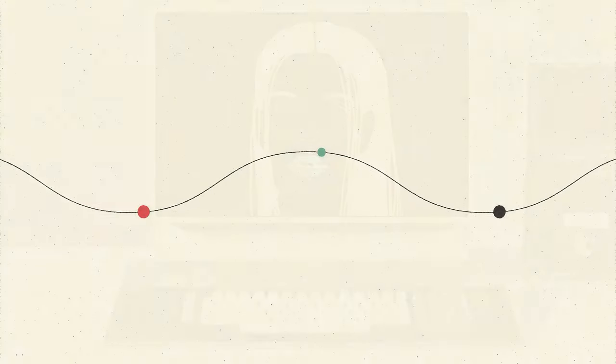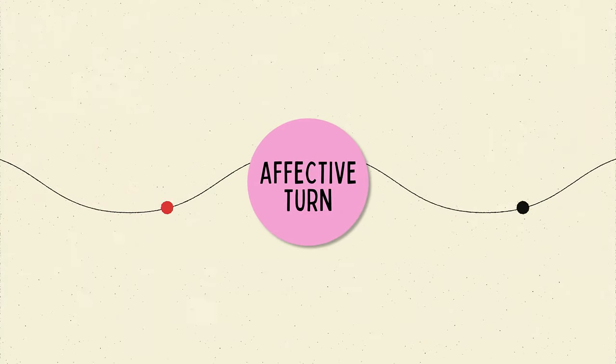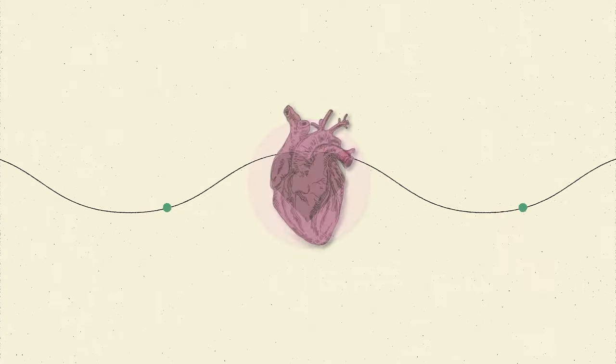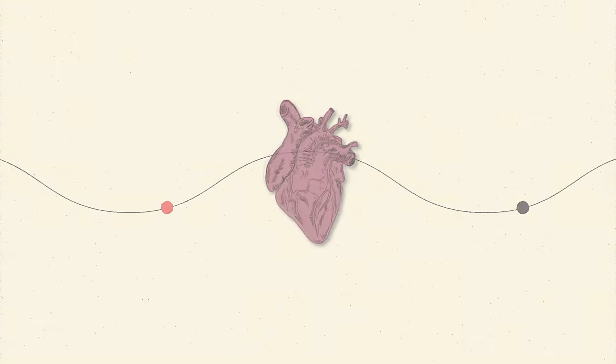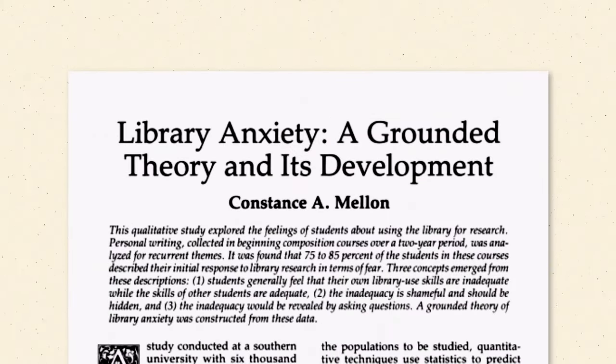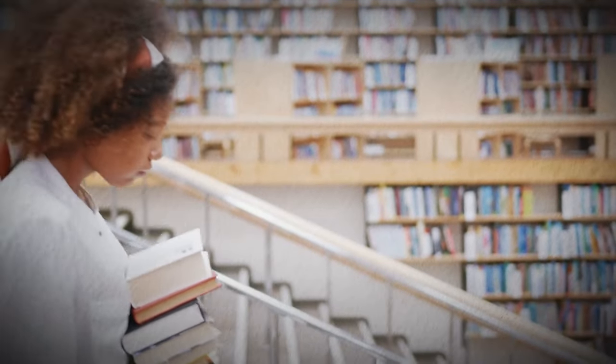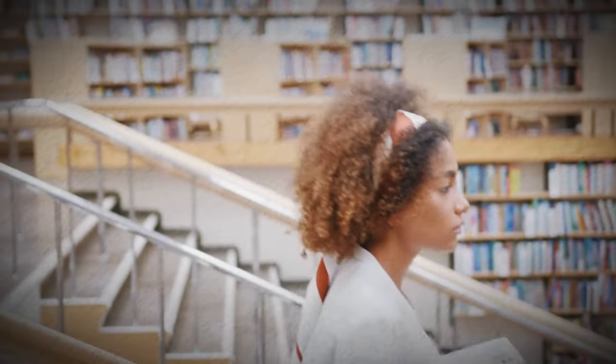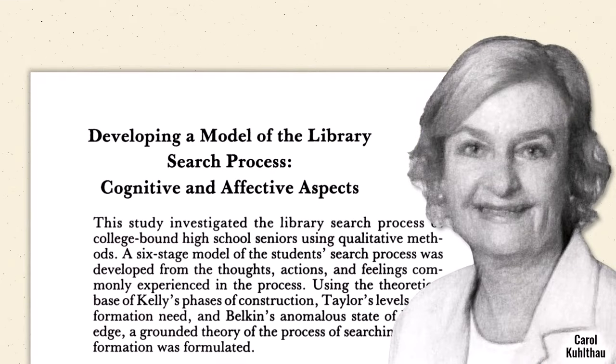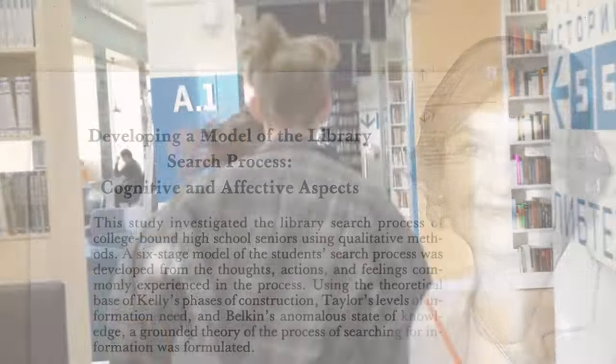An extension of the cognitive turn, the affective turn, recognized the importance of emotions in the information experience. This turn dates to Constance Mellon's 1986 idea of library anxiety. Her study of 6,000 undergraduates determined that the vast majority described their library visits in terms of fear. Soon thereafter, Carol Kuhlthau reported that high school students feel apprehension, uncertainty, and finally optimism during a library research project.